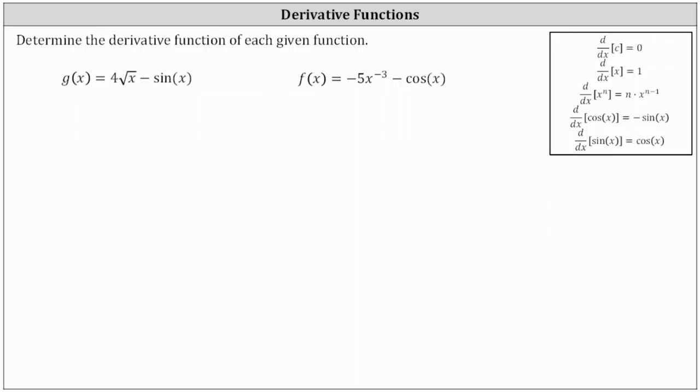We're asked to determine the derivative function of each given function. First, we have g of x equals 4 square root x minus sine x.